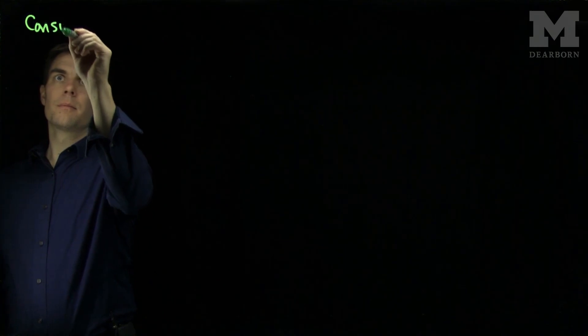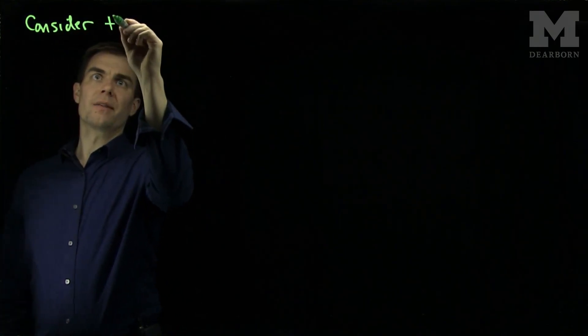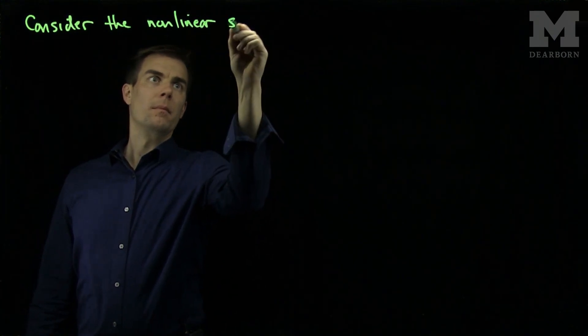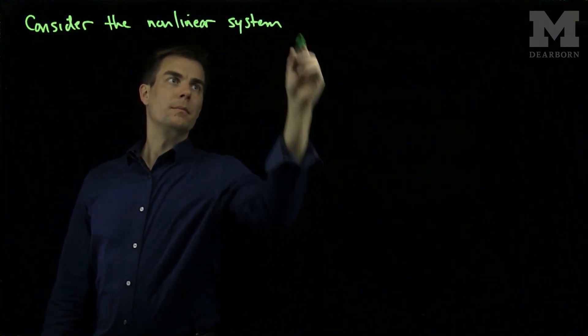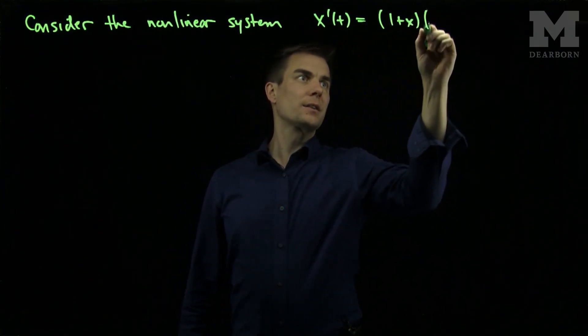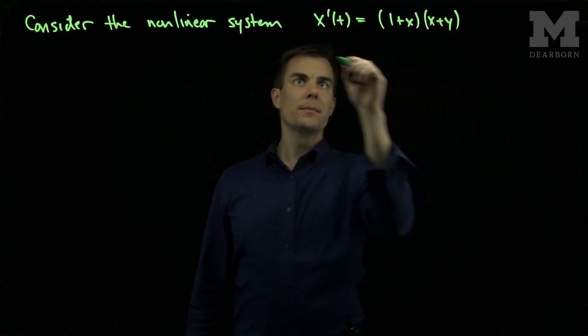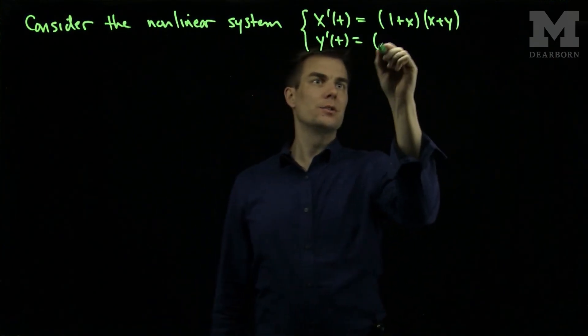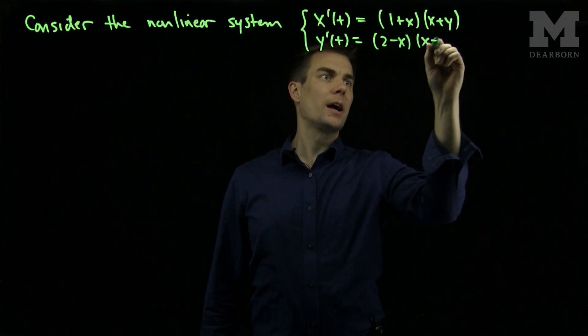Let's consider the following nonlinear system: x prime of t is 1 plus x times x plus y, and y prime of t is 2 minus x times x minus y.